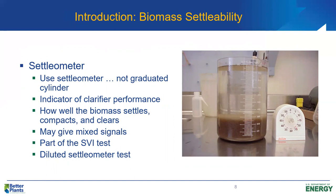If you were to ask me which single tool I'd choose to operate an activated sludge plant, I'd say give me a settleometer and I could probably do a reasonably good job. Obviously we want to use all the tools in our toolbox — like a doctor who should run whatever tests are needed, not just one. But the settleometer test is really valuable. It tells us a lot about how the process is performing: how the sludge is settling in the final clarifier, how the sludge is compacting, what our supernatant looks like. It also allows us to calculate the SVI — the sludge volume index — by taking the 30-minute settleability value in mL/L, dividing by the grams per liter of mixed liquor suspended solids, giving us SVI in milliliters per gram.